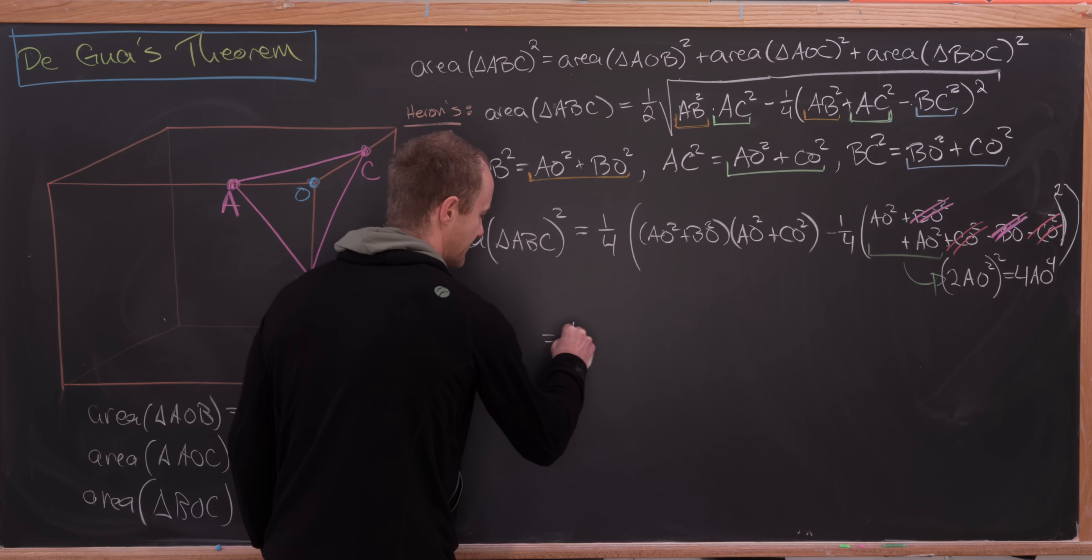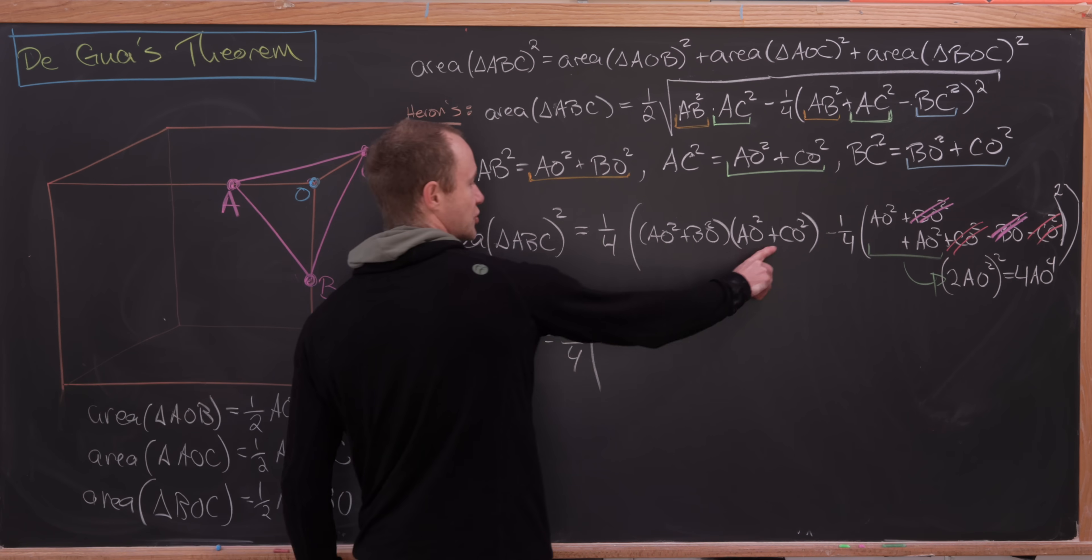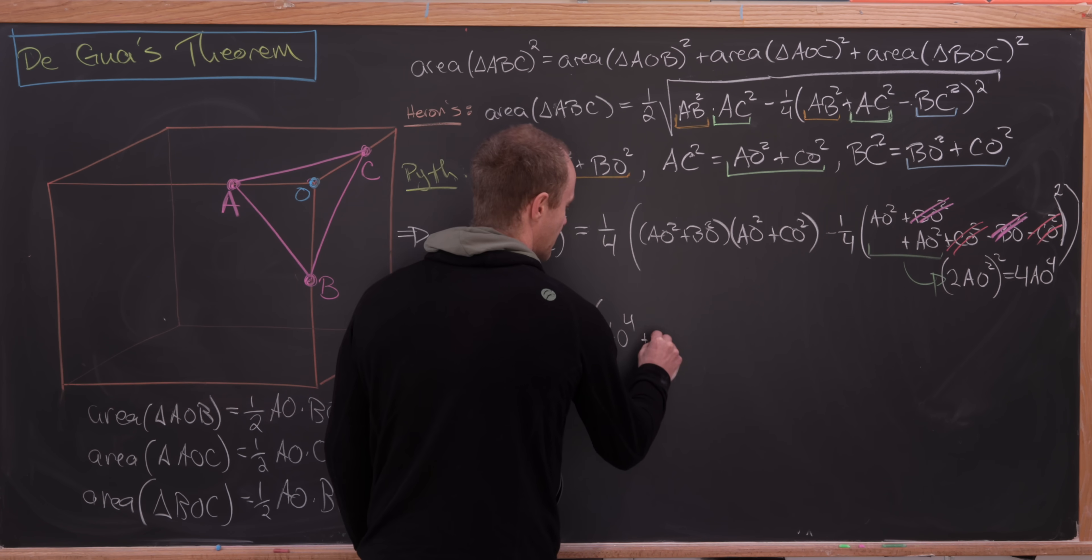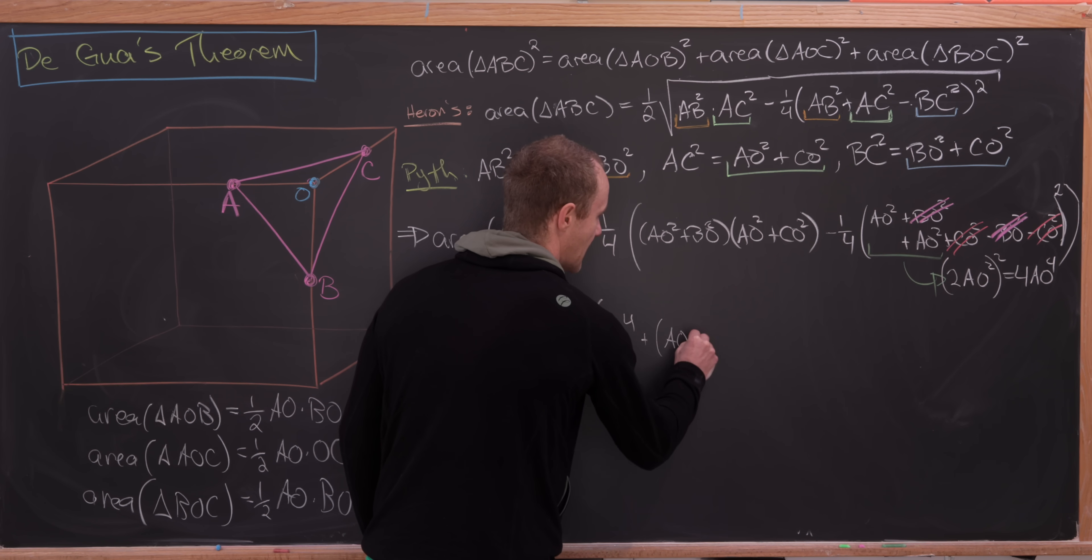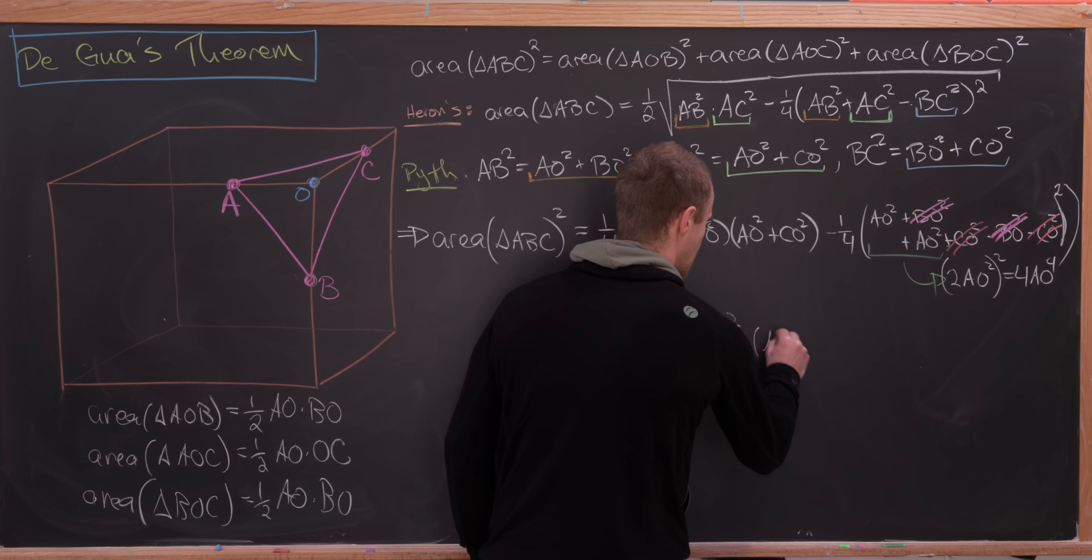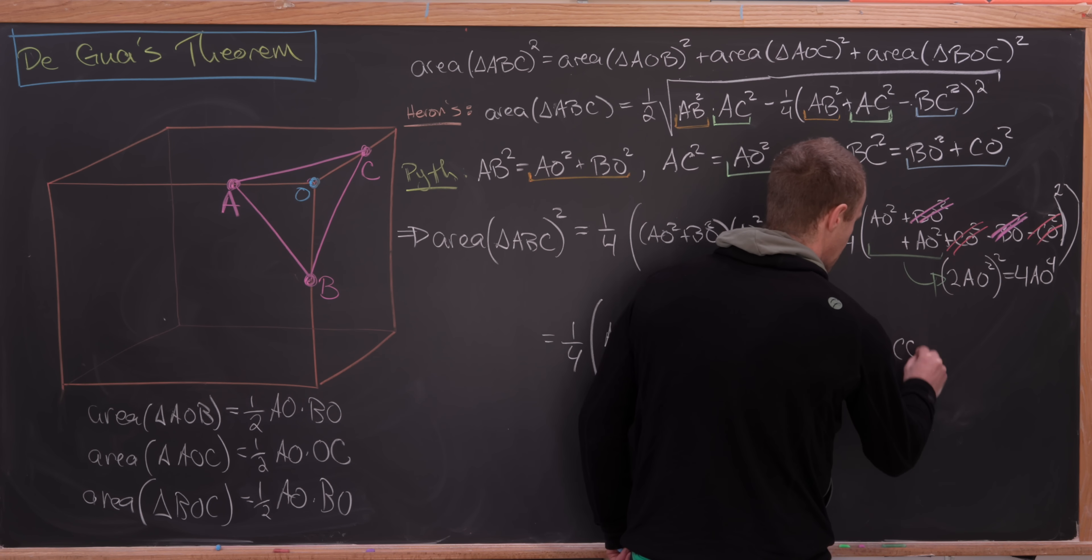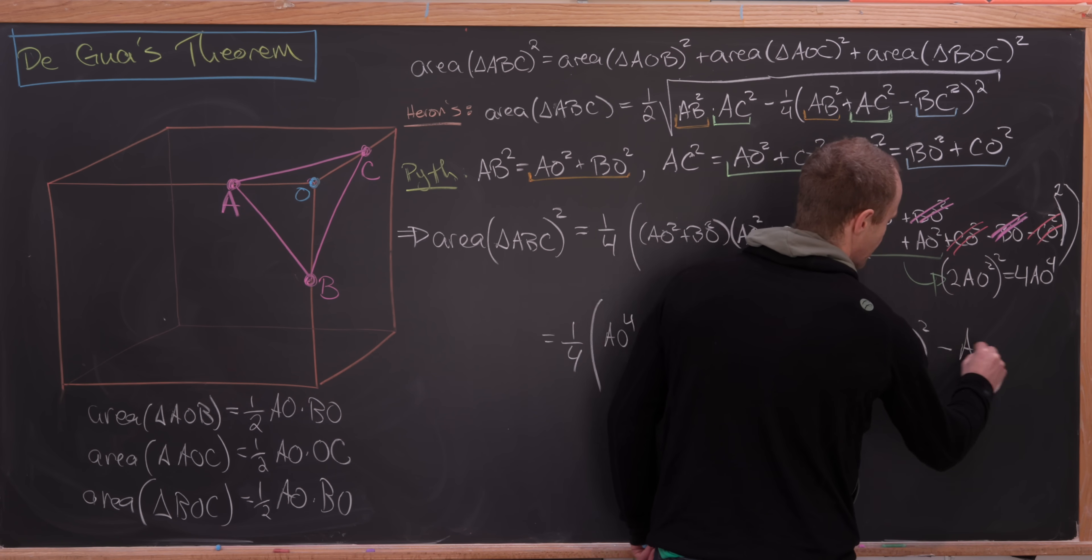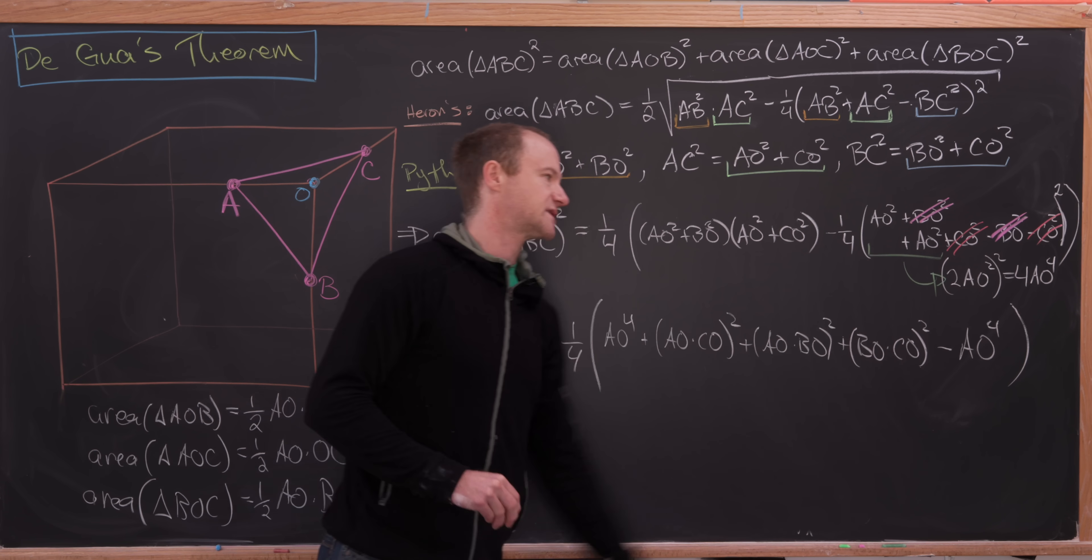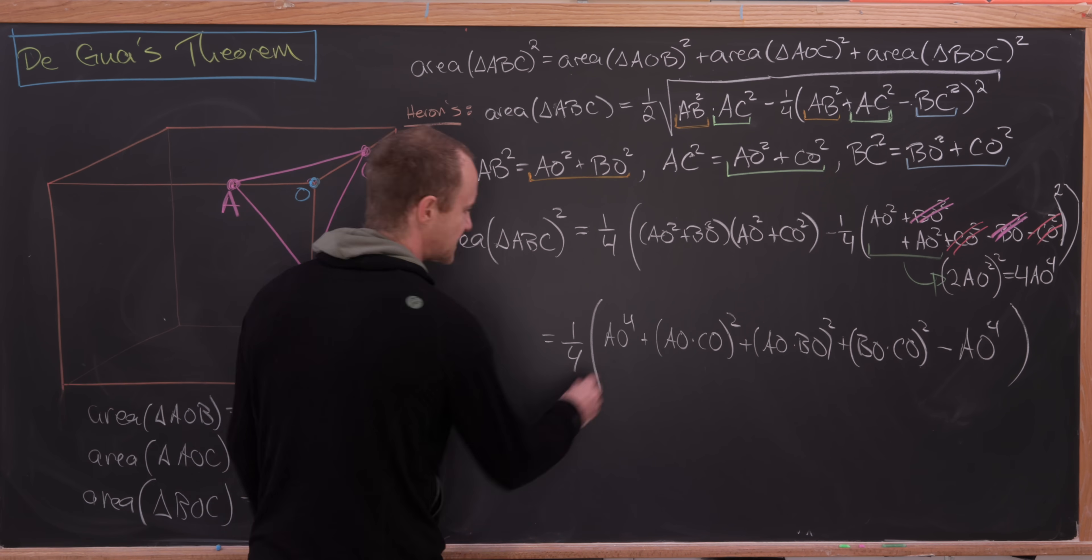Okay, so now let's go on to the next step. So we've still got this quarter out in front of the whole thing. And now if we distribute these two binomials into each other, we'll have AO to the fourth power and then plus AO times CO quantity squared. I'm factoring that square out. Plus AO times BO quantity squared. And then plus, finally, BO times CO quantity squared. And then notice that we've got minus an AO to the fourth based off of this minus quarter times 4AO to the fourth. But now observe that this bit cancels